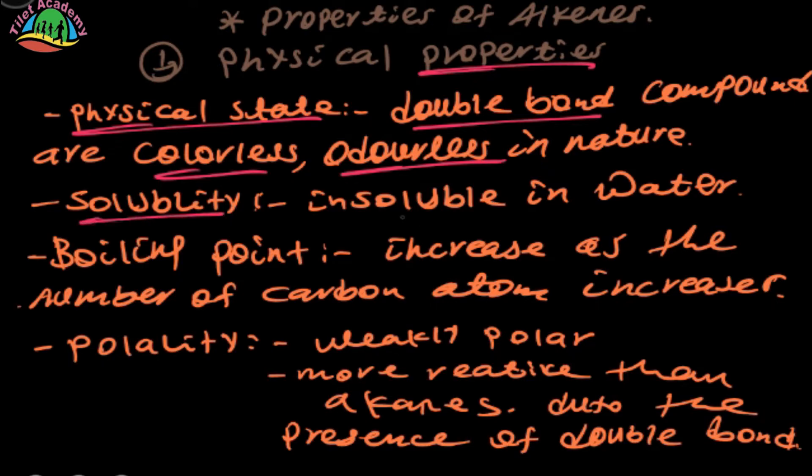The solubility of alkene is insoluble in water due to its non-polar characteristics. The boiling point increases as the number of carbon atoms increase in the chain. The melting point depends on the isomers. The polarity is weakly polar.